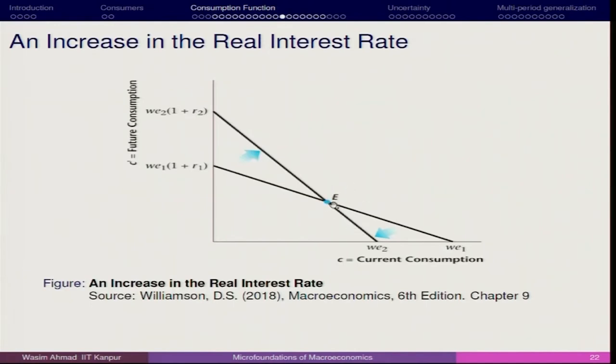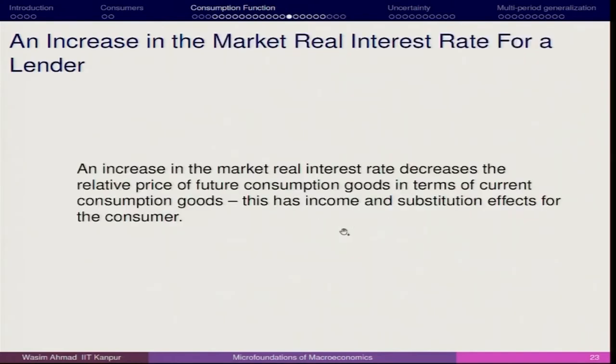The budget line pivots around the endowment point. An increase in the market real interest rate decreases the relative price of future consumption in terms of current consumption. The lender would go for lending when the rate of interest increases, but how much — and whether current consumption will increase or decrease — depends on the substitution and income effects. Future consumption is going to increase, partly because the marginal rate of substitution changes and both the substitution effect and income effect work in the same direction.